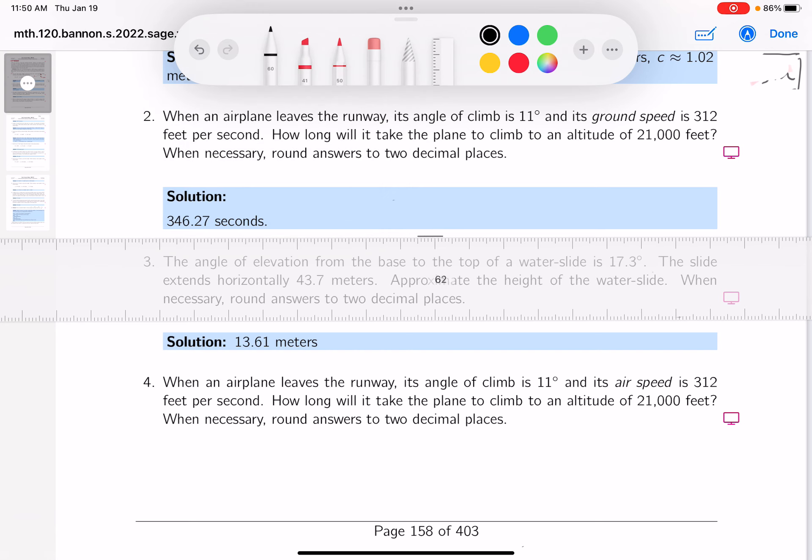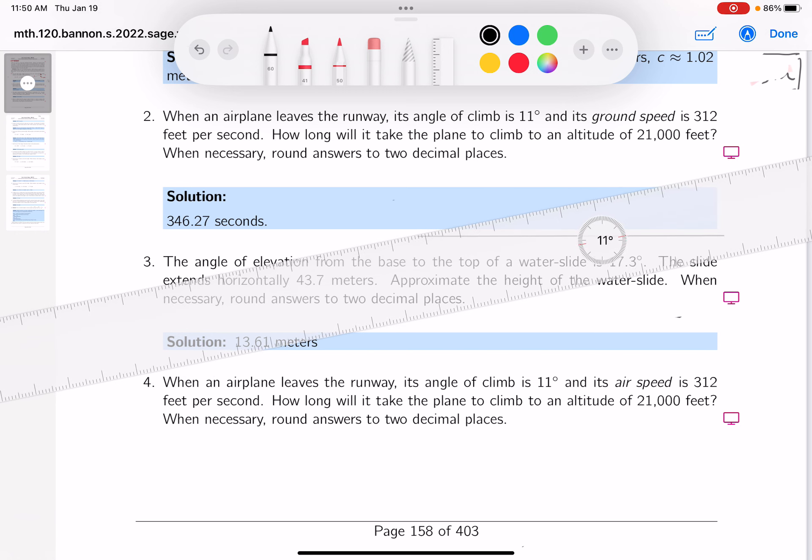So I put a horizontal line down over here. Then the question I'm reading is an airplane leaves a runway. Well, it leaves the runway at an angle of 11 degrees, so I'm going to do that over here. I'll put 11 degrees down.